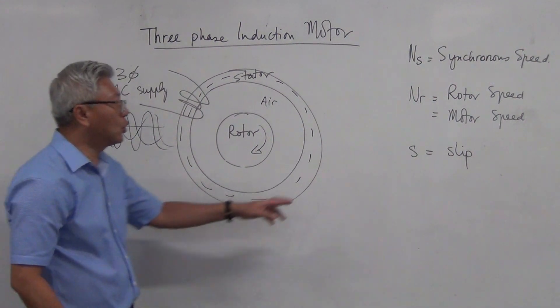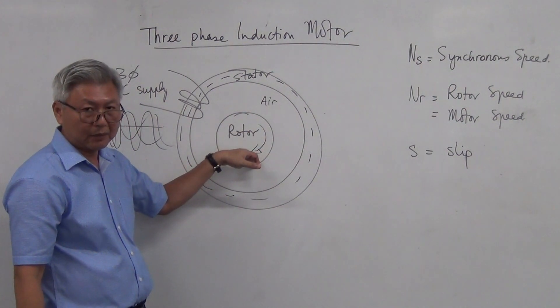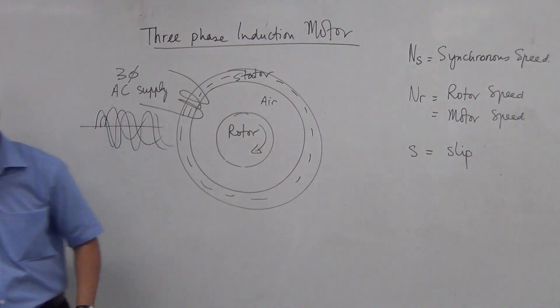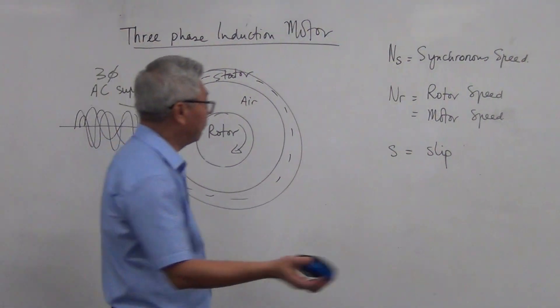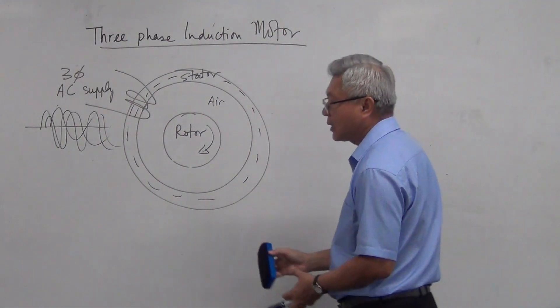And slip is the ratio to measure the difference between the synchronous speed and the rotor speed. So much about this theory of it working. Let's calculate, do some calculation on this synchronous speed.